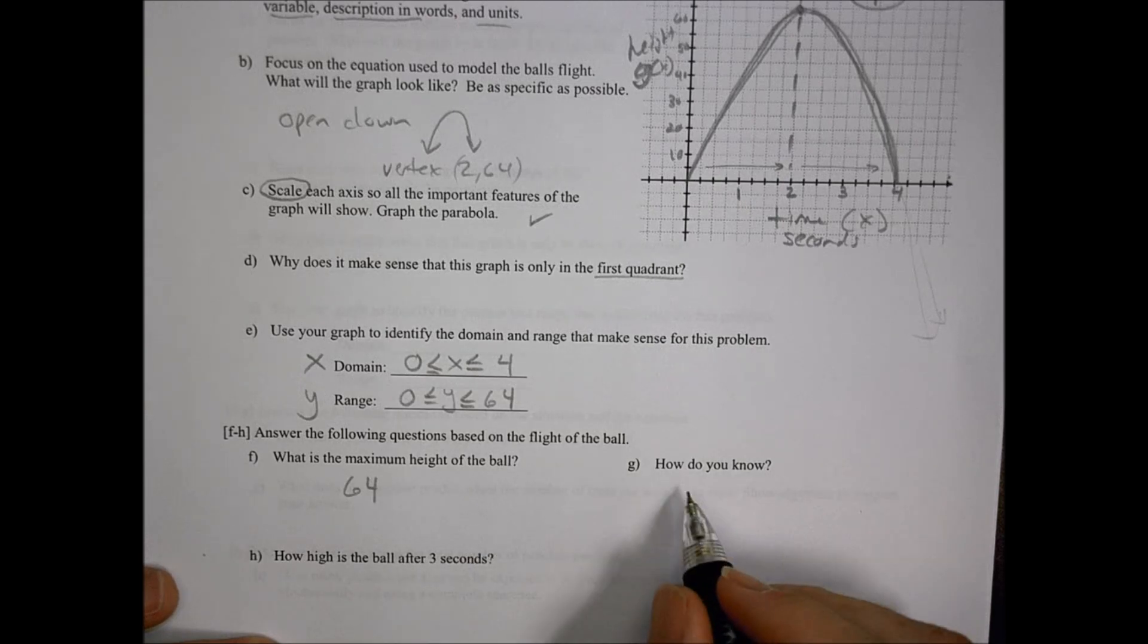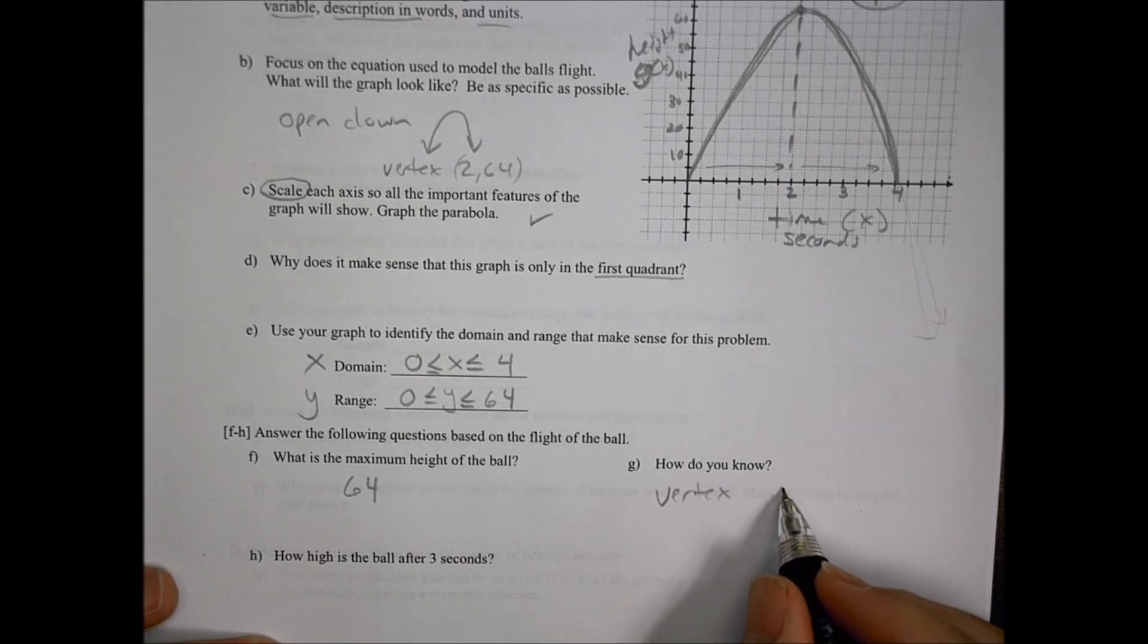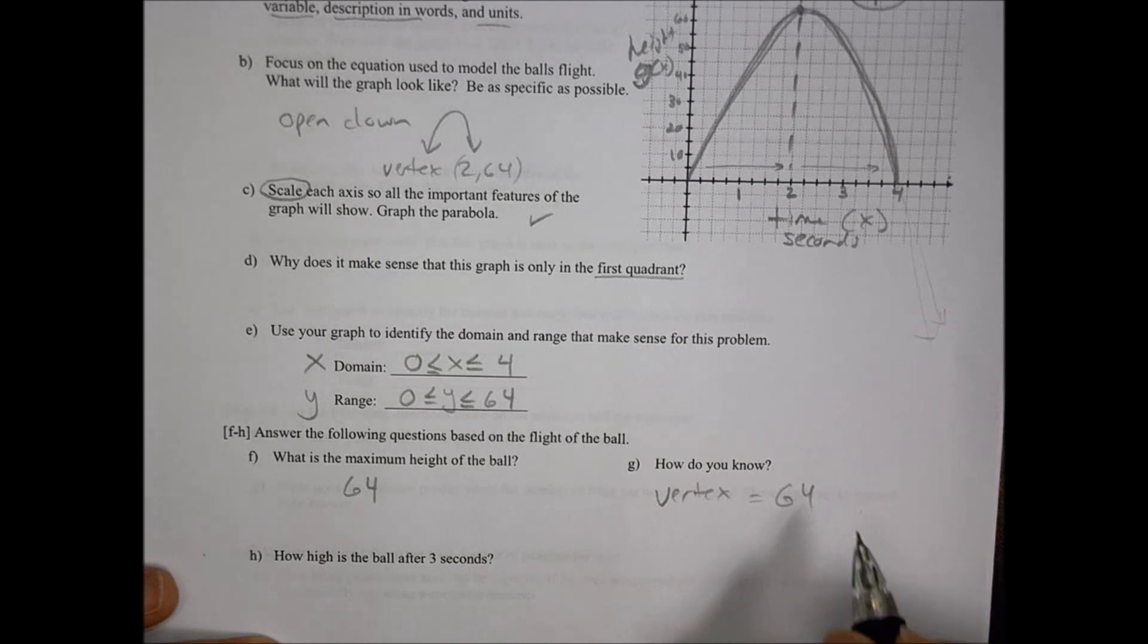Our maximum height of the ball is going to be 64, in this case we would probably say 64 feet. How do you know? We know that because of the vertex, which is at 64. That's the high point.